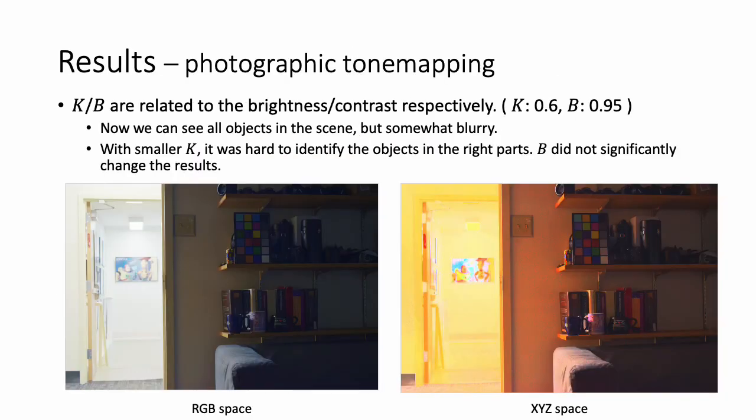Parameters K and B are related to the brightness and contrast respectively. I used K with 0.6 and B with 0.95. Now we can see all objects in the scene, but somewhat blurry. With smaller K, it was hard to identify the objects in the right parts, and actually B did not significantly change the results.